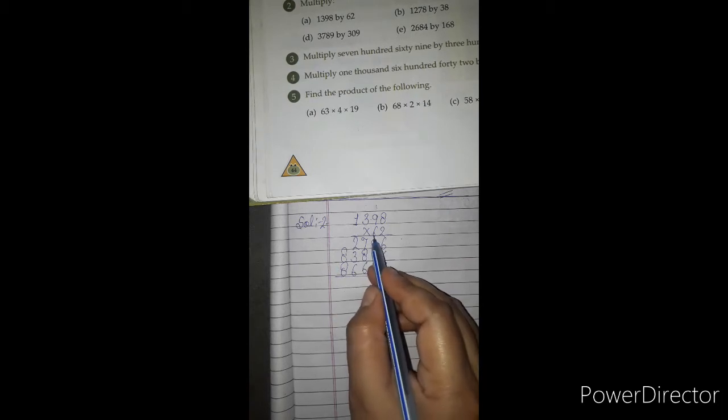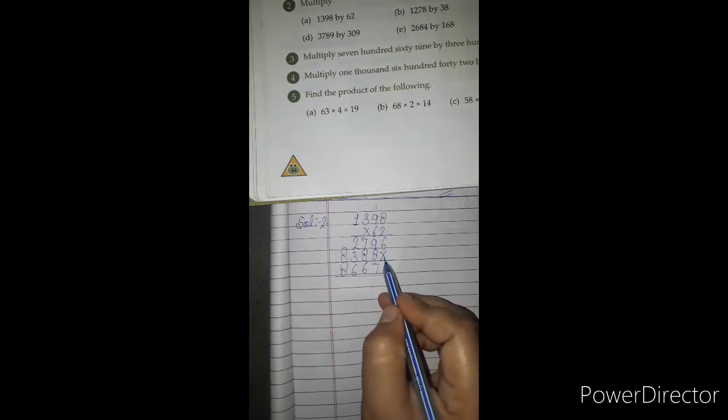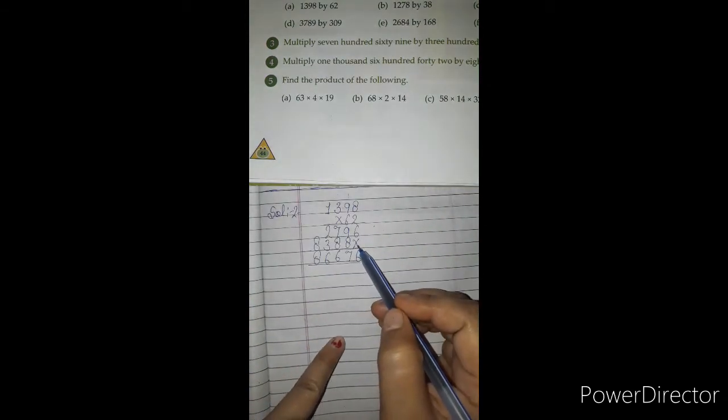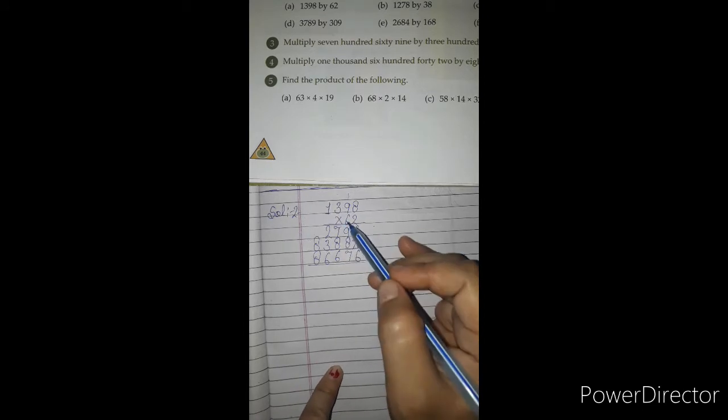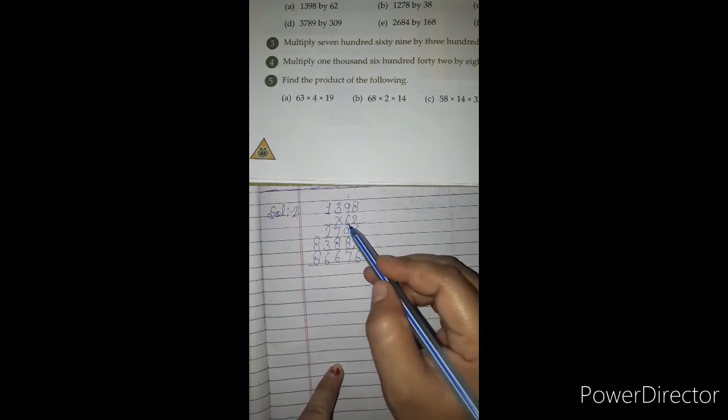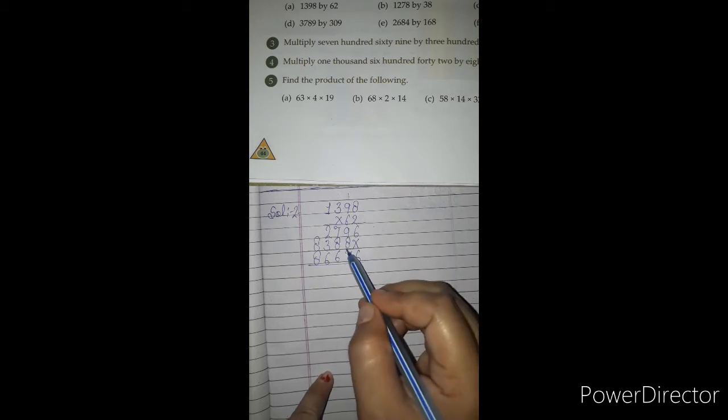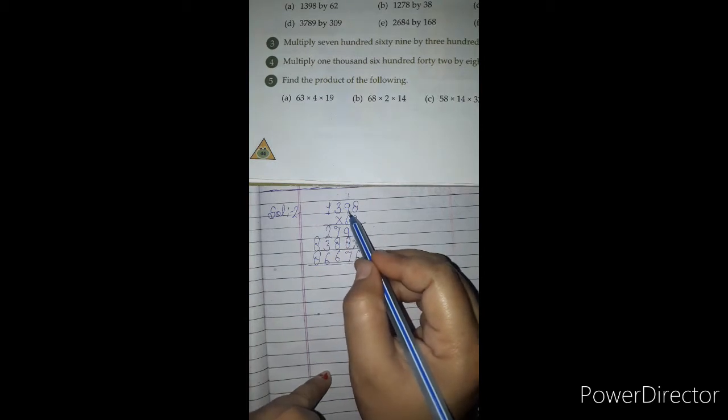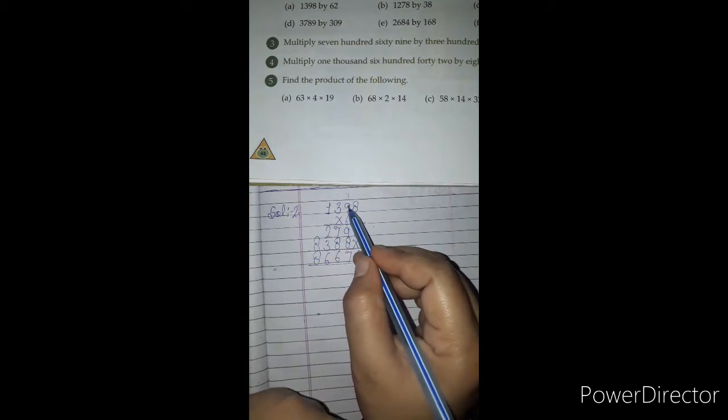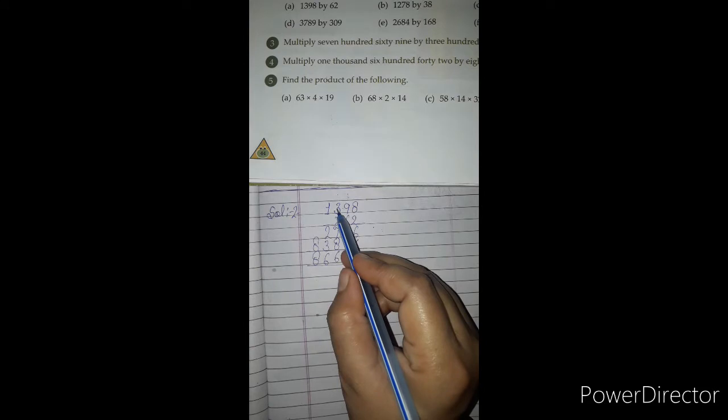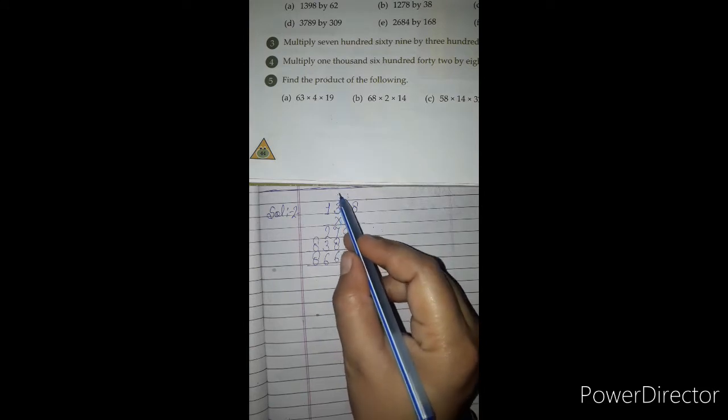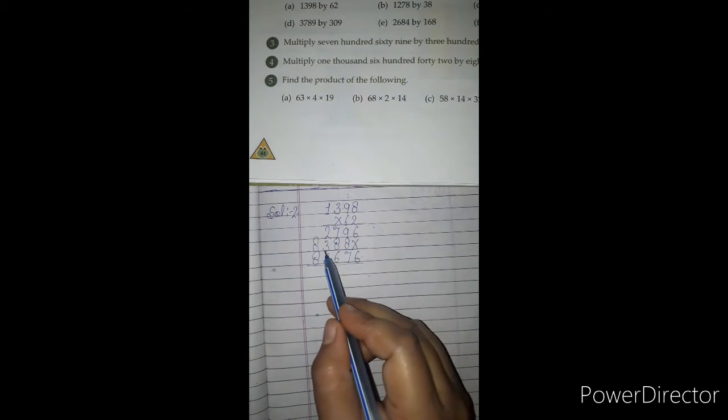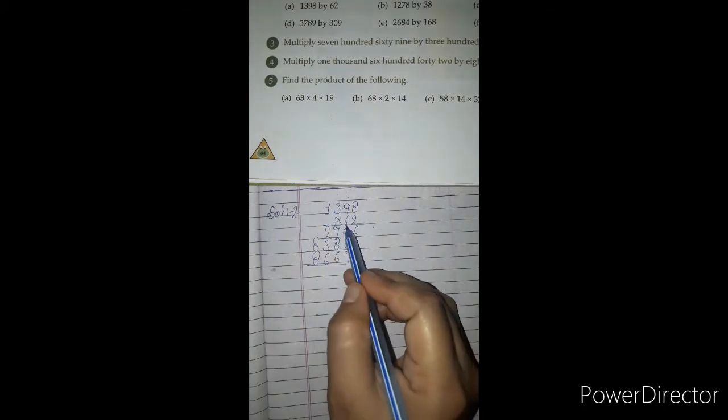2 times 1 is 2. When we start multiplying from the second line, we use a cross or 0 below the first digit. Then we start our multiply. So, 6 times 8 is 48, write 8, carry 4. 6 times 9 is 54, add 4 is 58, write 8, carry 5. 6 times 3 is 18, add 5 is 23, write 3, carry 2. 6 times 1 is 6, add 2 is 8.